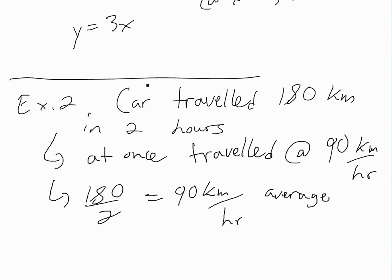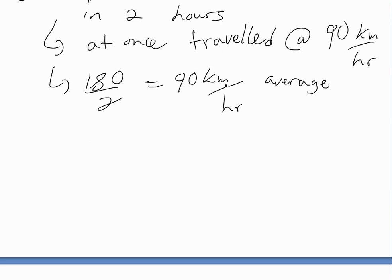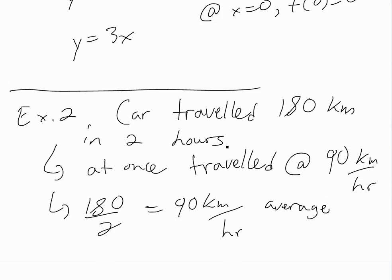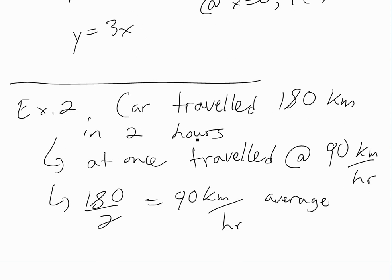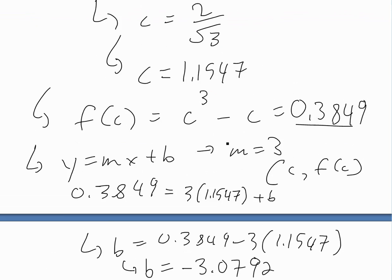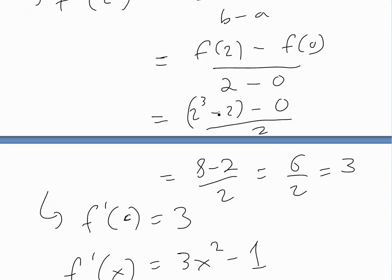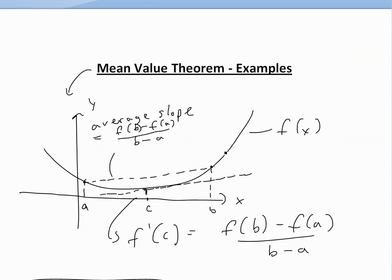That's basically all the mean value theorem is — there's at least one point where you actually travel the average speed. You can also interpret it as: even if your instantaneous velocity is always changing because you're running different speeds, there will be at least one time where you traveled the average speed. Hopefully you learned from this — stay tuned for another math easy solution.